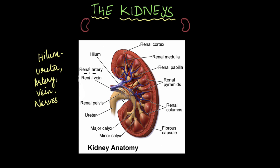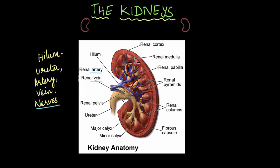For example, you have the renal artery and the renal vein. The renal artery brings in the blood that needs to be filtered, and the renal vein removes the blood that has been filtered from the kidneys. The hilum is also the entrance through which the nerves that innervate the kidneys enter the kidneys.